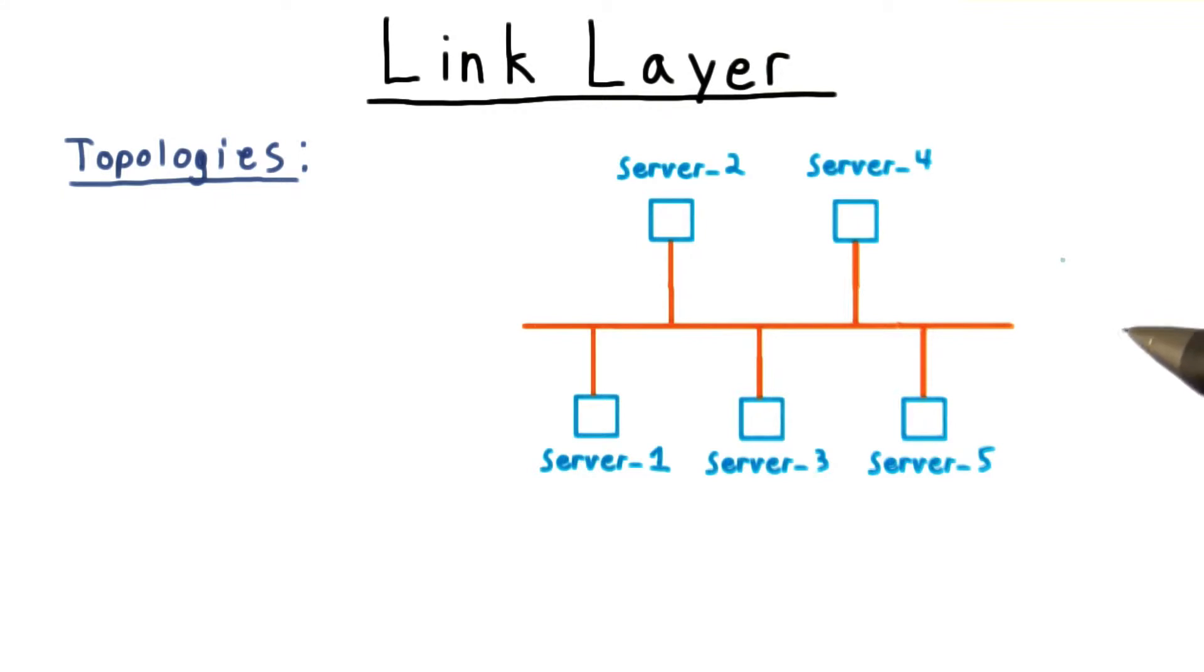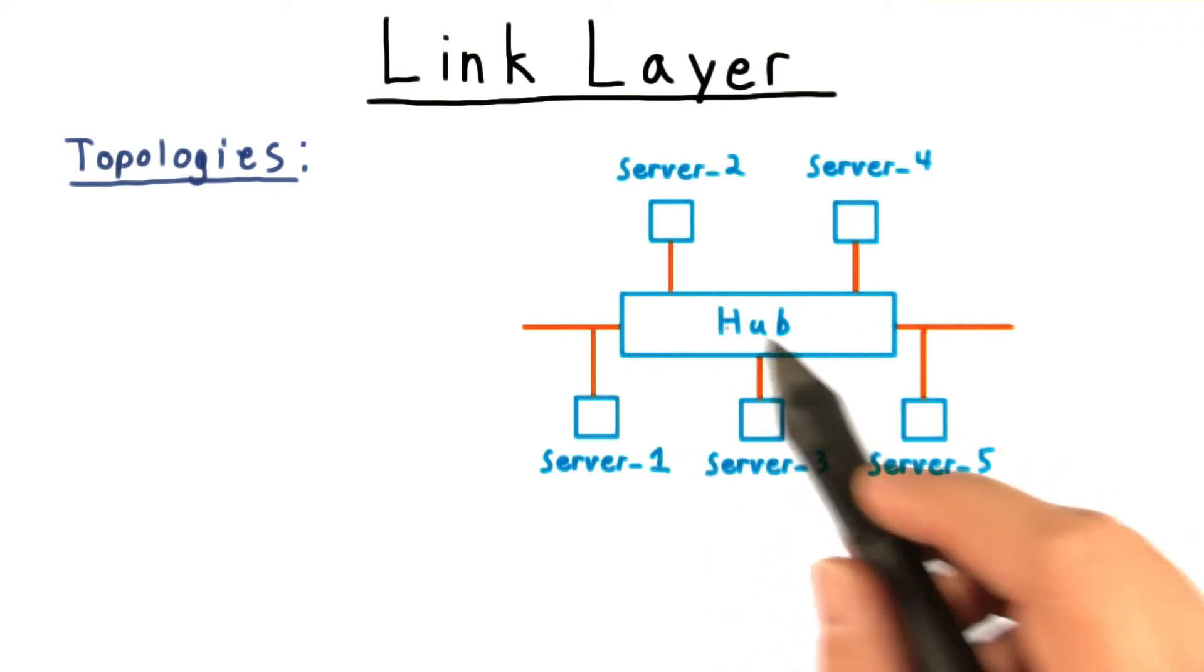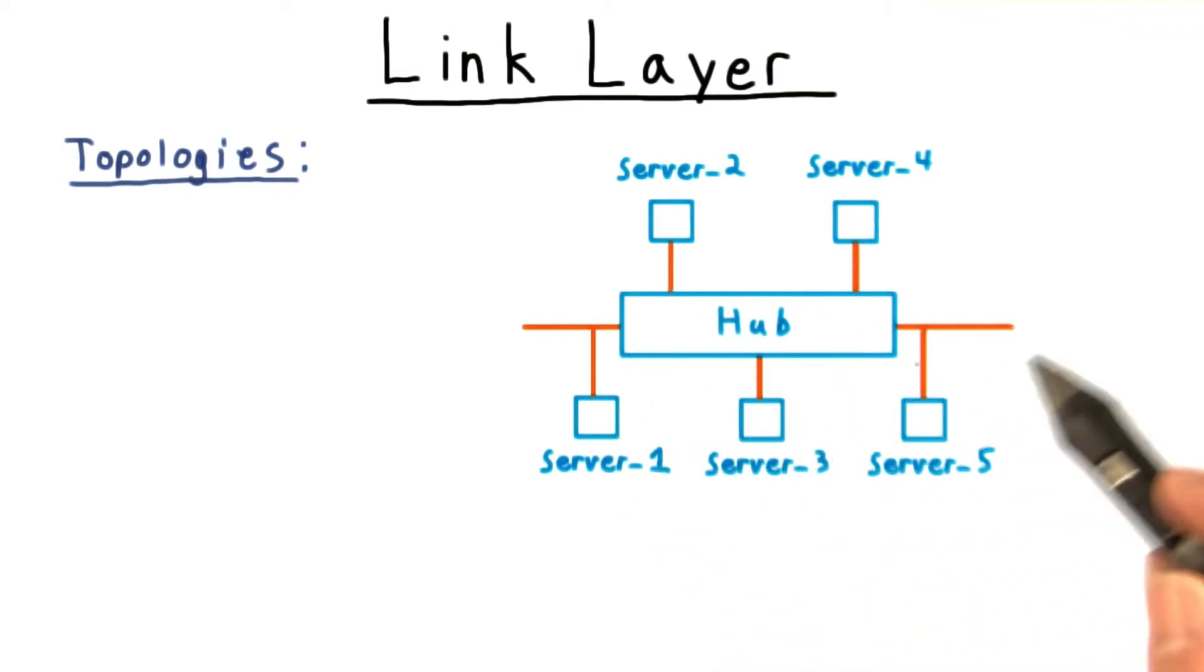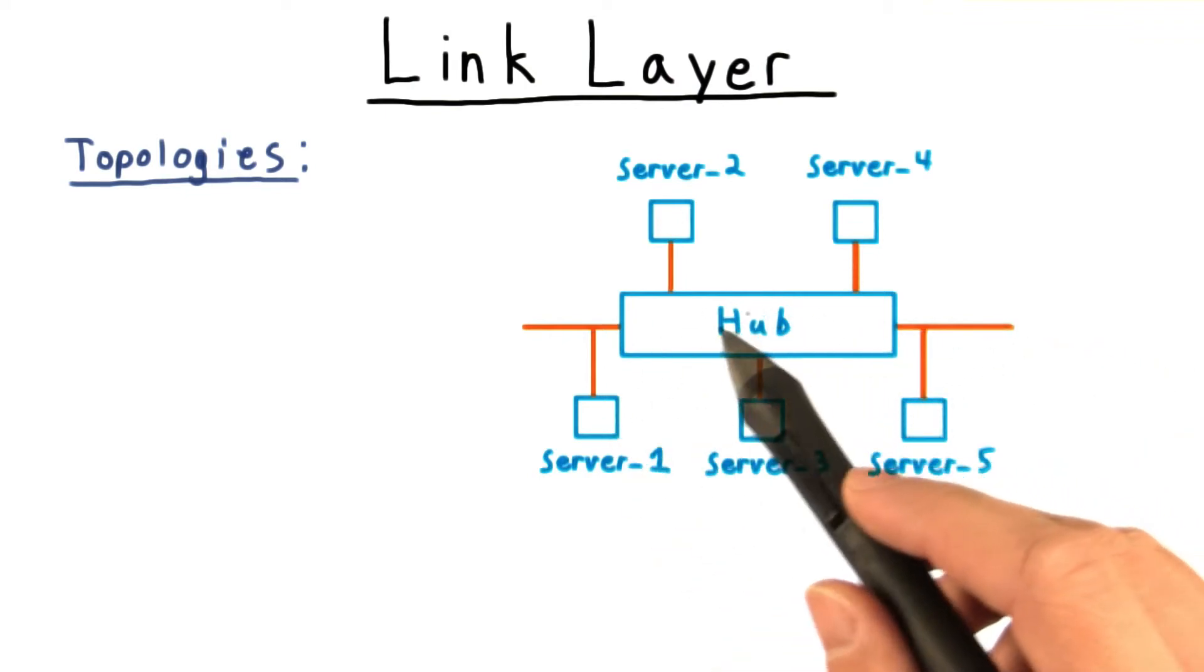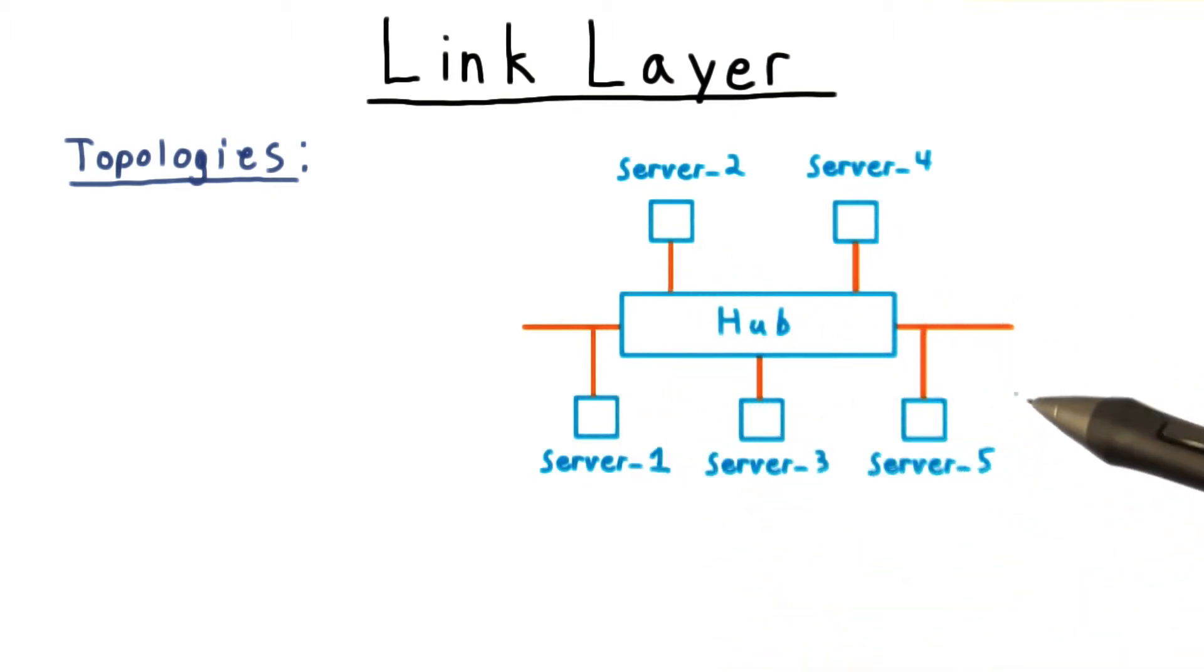This is called a bus topology. Actually, the original Ethernet had this topology with all the cables connected to a common hub, making it look like a star topology. In reality, the hub would simply relay whatever signal it got to all the other nodes, effectively making all the cables one medium.